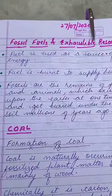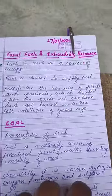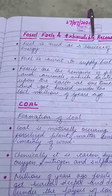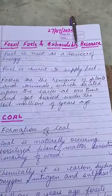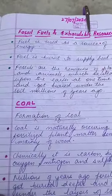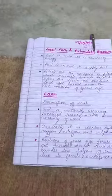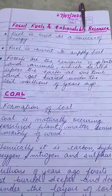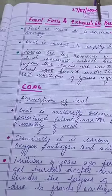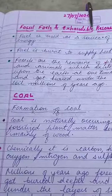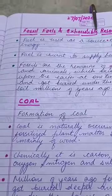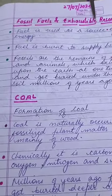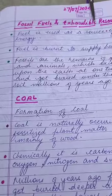Natural gas — these are all examples of fossil fuels. Now we will discuss about coal. Coal is also a fossil fuel. Coal is a naturally occurring fossilized plant matter, which is wood that has been under high pressure and temperature for millions of years in the absence of air.